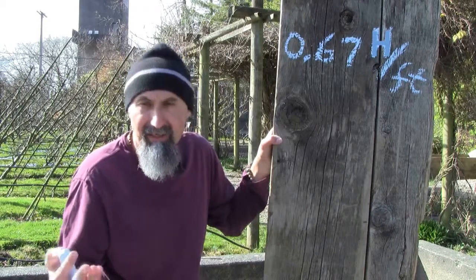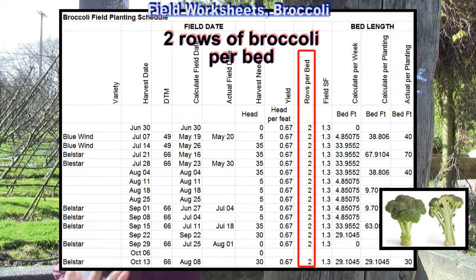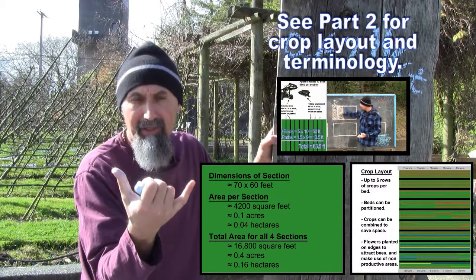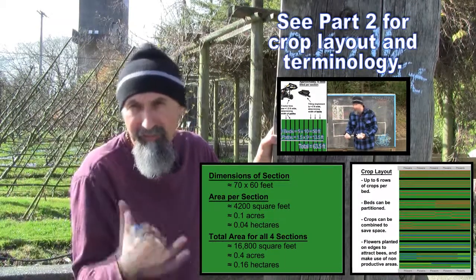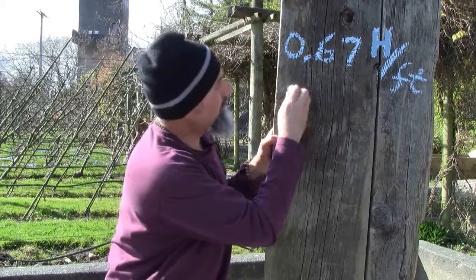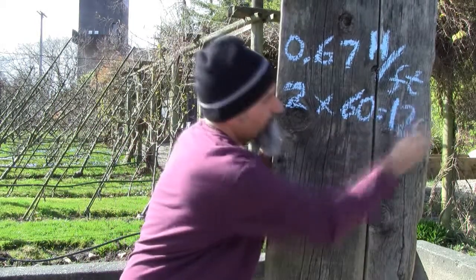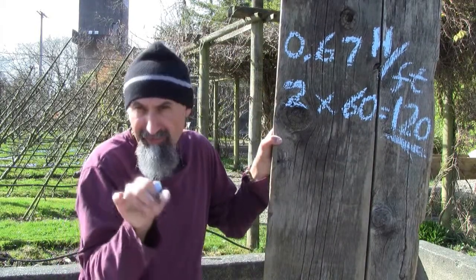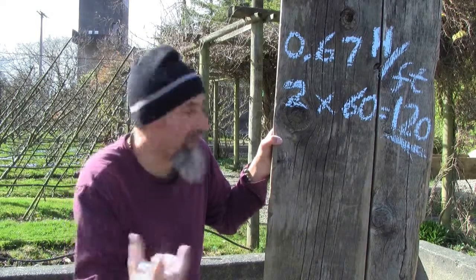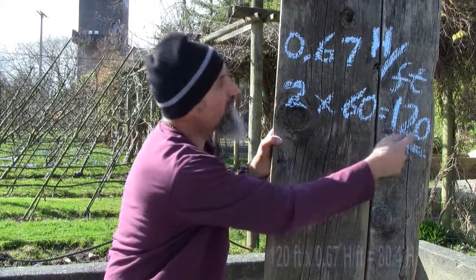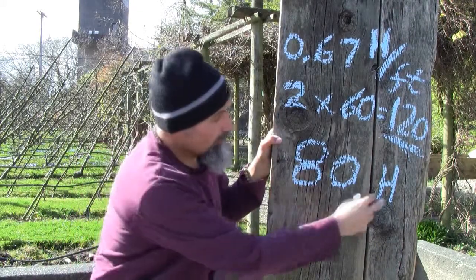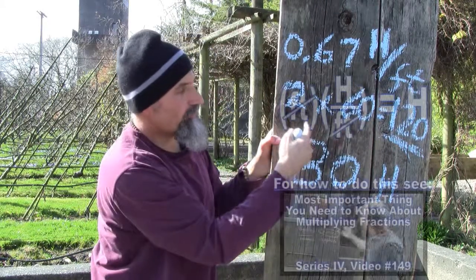Another column in their spreadsheet states they have two rows of broccoli per bed. Their bed is five feet wide and their rows are 60 feet long. So for one bed of broccoli they have two rows, each 60 feet long — that's 2 × 60 = 120 feet of broccoli. To figure out how many heads they can get from 120 feet, you calculate 120 × 0.67, which gives around 80 heads of broccoli.